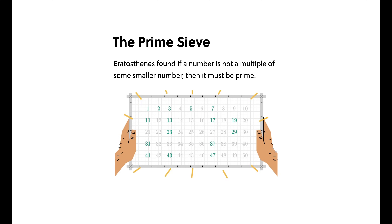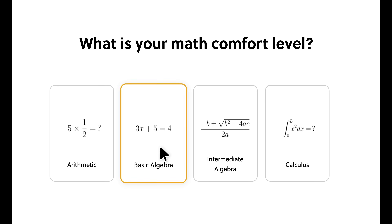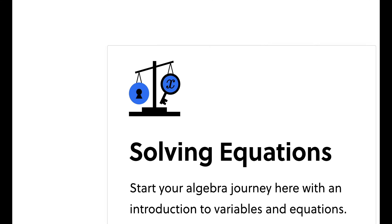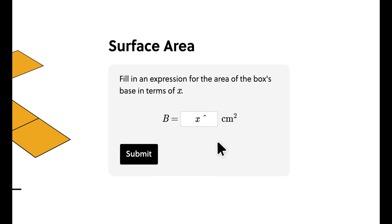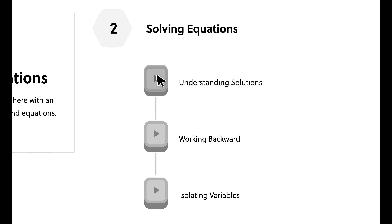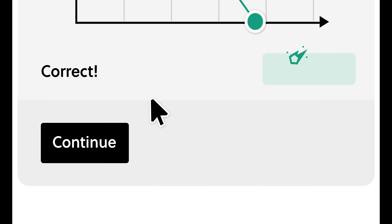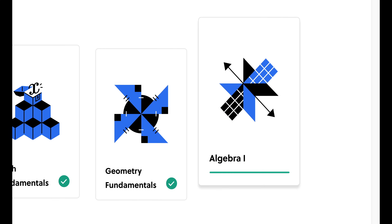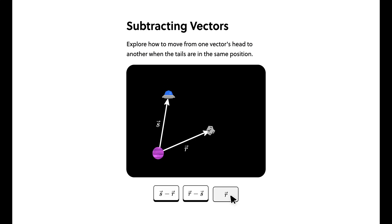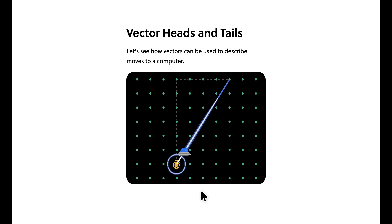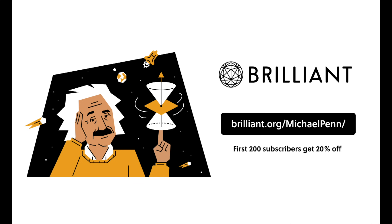Brilliant is a learning experience that's as engaging as it is effective, offering interactive hands-on courses designed to make you truly master concepts in math, science, computer science, and more. Whether you're a student, a professional looking to upskill, or just someone with a thirst for knowledge, Brilliant has something for everyone. Visit brilliant.org/MichaelPenn for a 30-day free trial, and the first 200 people will get 20% off their annual premium subscription. Thanks to Brilliant for sponsoring today's video.